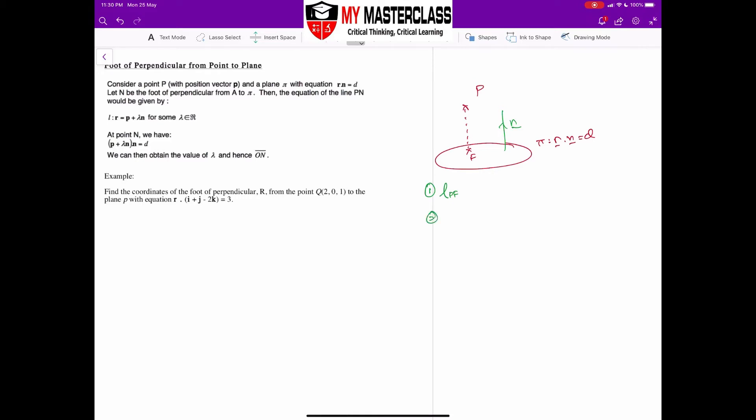Second step, I then find the intersection between line PF and the plane. This will essentially give me the foot of perpendicular.